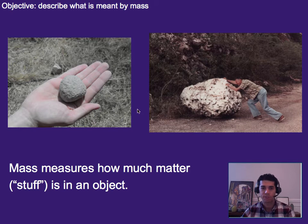Now, mass is the measure of how much matter or stuff is in an object. So here we have an example of a small rock. It doesn't have very much material in it versus we have an example of a large rock where there's much more stuff there, and therefore it's harder to push on.